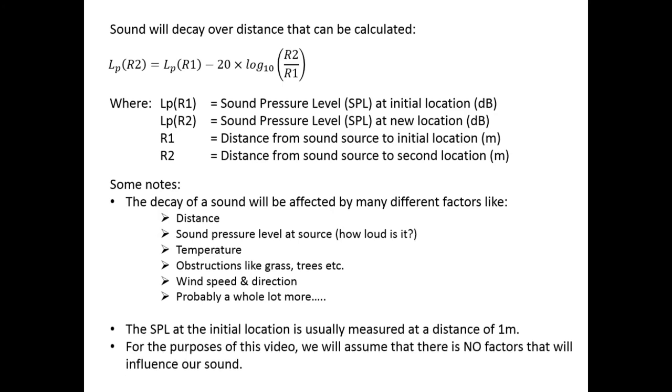Now the SPL, or the sound pressure level, at the initial location is usually measured at a distance of about 1 meter. So what will happen in practice is someone will have a measuring instrument and measure the sound pressure level at 1 meter away from the source. Then, at a further distance, I can now use the formula, that you can see on the screen, to calculate how loud a sound will be at a second position. For the purposes of this video, we will assume that there is no factors that will actually influence our sound. Now, I know this is not reality, but for purposes of this video to make the calculations clear and understandable, we will use no factors that will influence it.